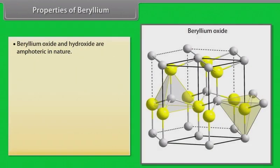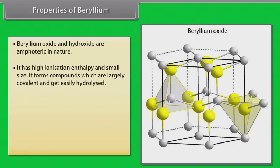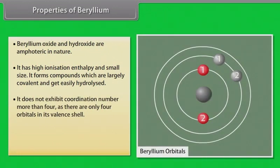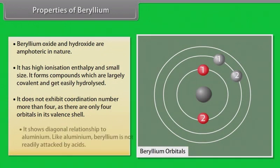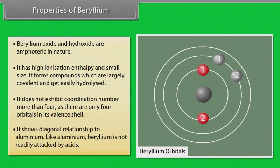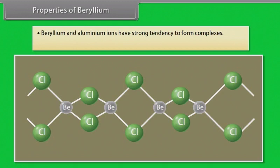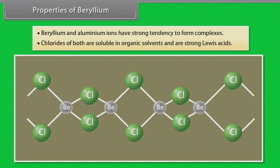Properties of Beryllium. Beryllium oxide and hydroxide are amphoteric in nature. It has high ionization enthalpy and small size. It forms compounds which are largely covalent and get easily hydrolyzed. It does not exhibit coordination number more than 4 as there are only 4 orbitals in its valence shell. It shows diagonal relationship to aluminium. Like aluminium, beryllium is not readily attacked by acids. Beryllium and aluminium ions have strong tendency to form complexes. Chlorides of both are soluble in organic solvents and are strong Lewis acids.